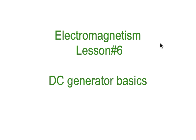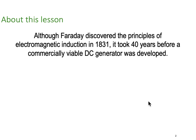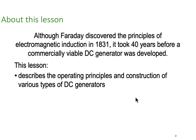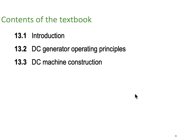This is electromagnetism lesson number six, looking at the basics of DC generators. Although Michael Faraday discovered the principles of electromagnetic induction in 1831, it took another 40 years before a commercially available DC generator was developed. In this lesson we'll describe the operating principles and construction of various types of DC generators, covering sections 13.1 introduction, 13.2 DC generator operating principles, and 13.3 actual machine construction.